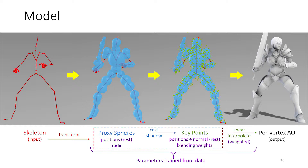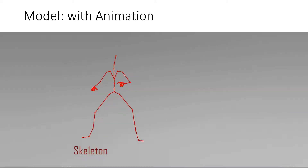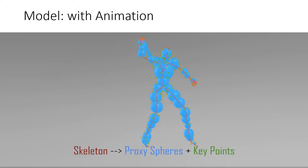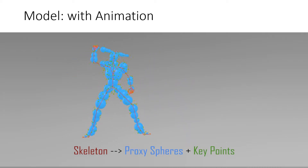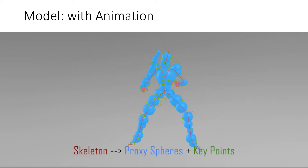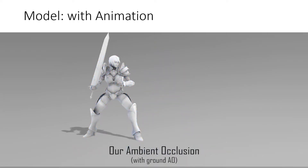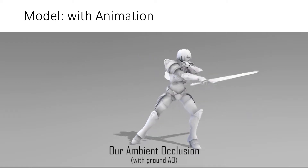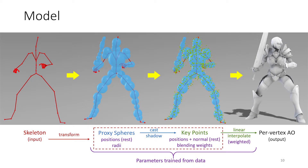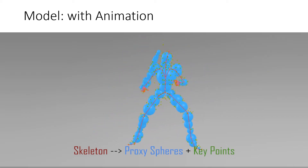This is a high-level description of the ambient occlusion model. On a very high level, you can see our model as one that takes the state of the skeleton as input and outputs per-vertex ambient occlusion. Essentially, we have a skeleton, and on that skeleton a number of proxyspheres are placed. We also place what we call keypoints, which are represented as points with position and a normal. The proxyspheres cast occlusion onto these keypoints, and each vertex receives occlusion from a number of keypoints. What we train are the position and radii of the proxyspheres, the positions and normals of the keypoints, as well as the weights per vertex for how each keypoint affects each vertex. Proxyspheres are rigidly skinned, while the keypoints don't need to be rigid.